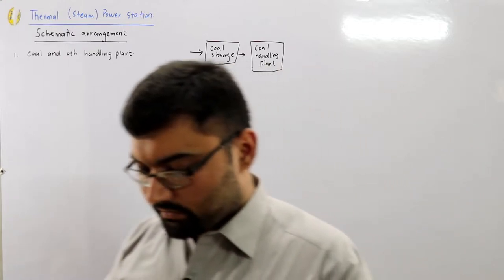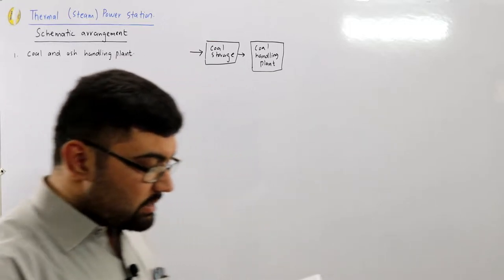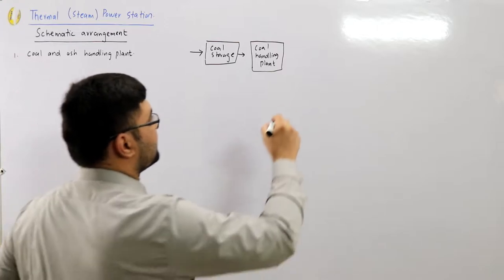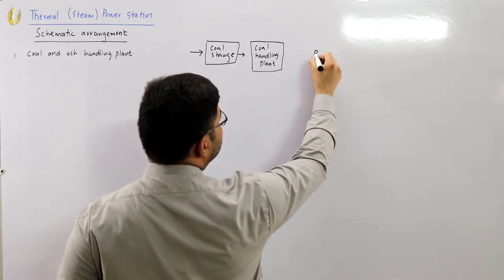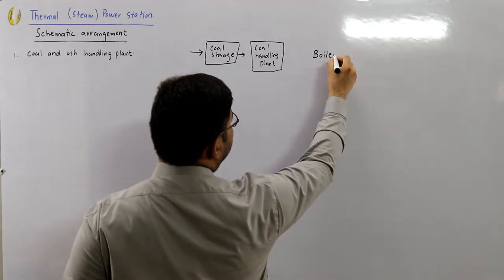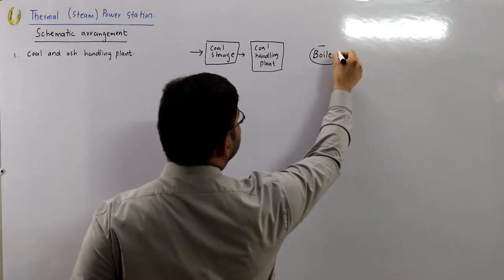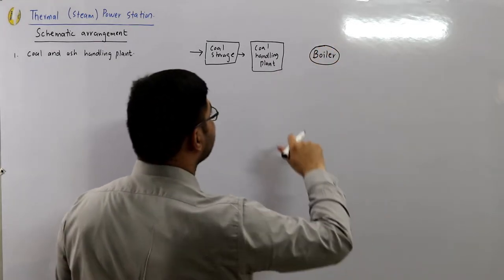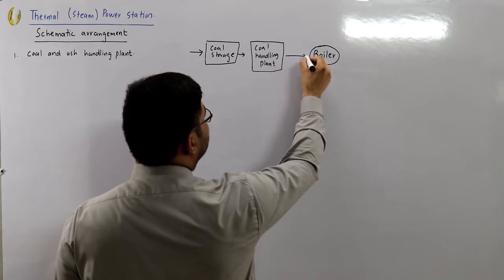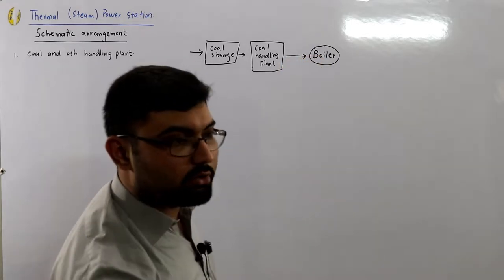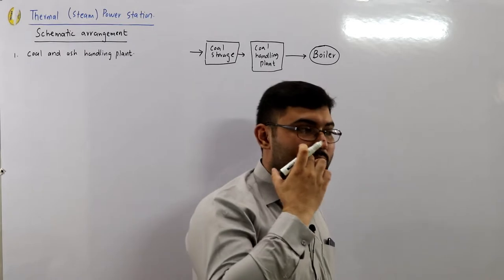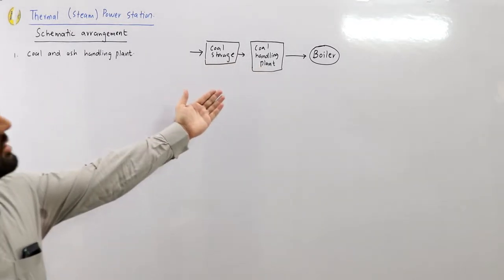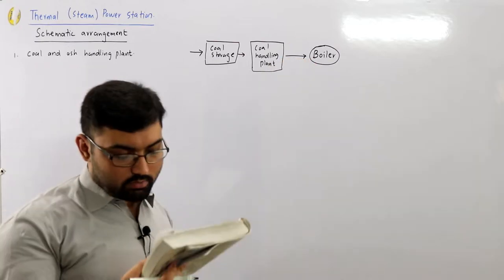The pulverized coal is then fed to the boiler by means of belt conveyors — like the belt system you see in a treadmill or at airport luggage transport. So after pulverization, the coal is fed automatically into the boiler.